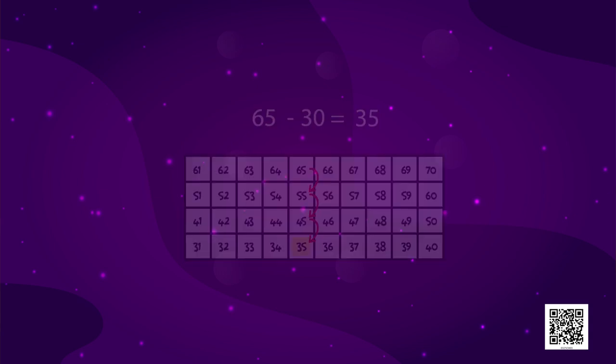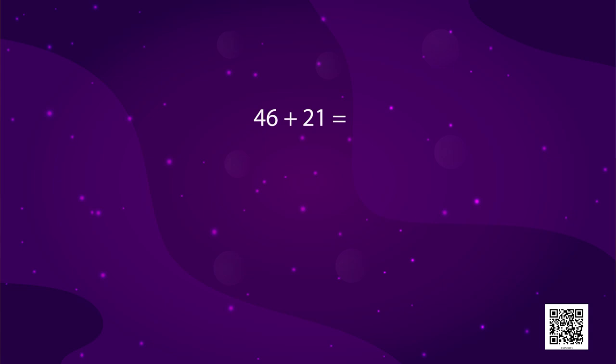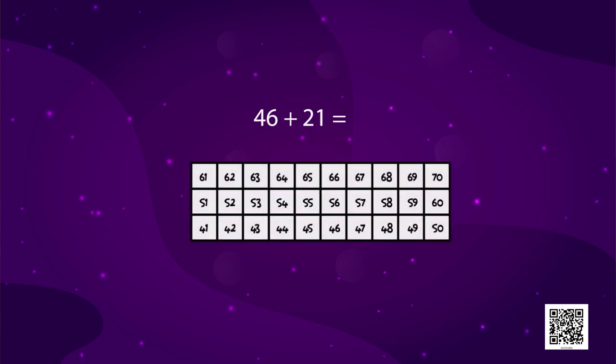Next number is 46 plus 21. Now, can you do it? Just think. How will you do it? 46 plus 21. First, you will add 20 by moving two steps upwards. And you reach 66. And then, one step forward. And you reach which number? 67.